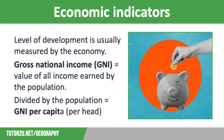The level of development in a country is usually measured by the economy, or how much money it makes. This is known as Gross National Income, or GNI. It is the total monetary value of all income earned by the country's residents — both individuals and businesses — from both domestic and foreign sources during a specific time, typically a quarter of a year. It takes into account not only production within the country's borders, but also income earned by citizens and businesses outside the country's borders.